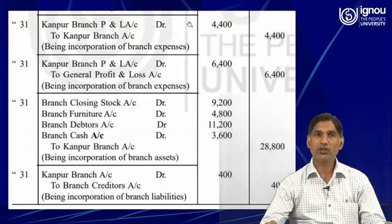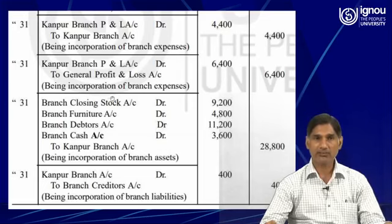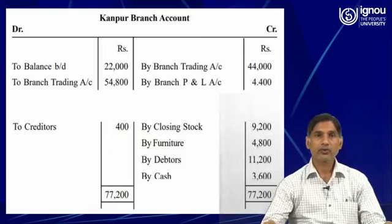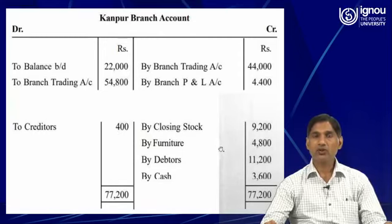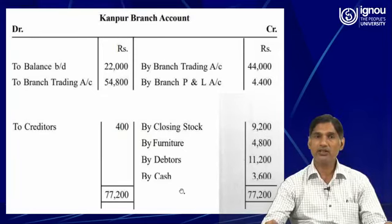Kanpur branch profit and loss account has been debited to Kanpur branch for being incorporation of branch expenses and so forth. Here creditors 400 is given in the question as the liability side. Closing stock 9,200 — the asset is given in the trial balance. Furniture 4,800 given in the trial balance, debtors 11,200 given in the trial balance, cash 3,600 given in the trial balance.